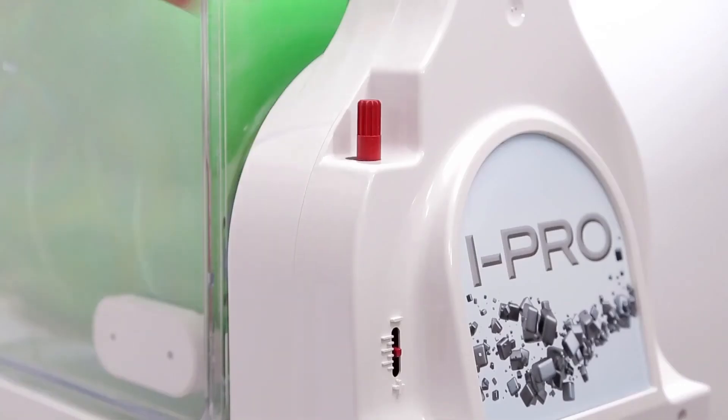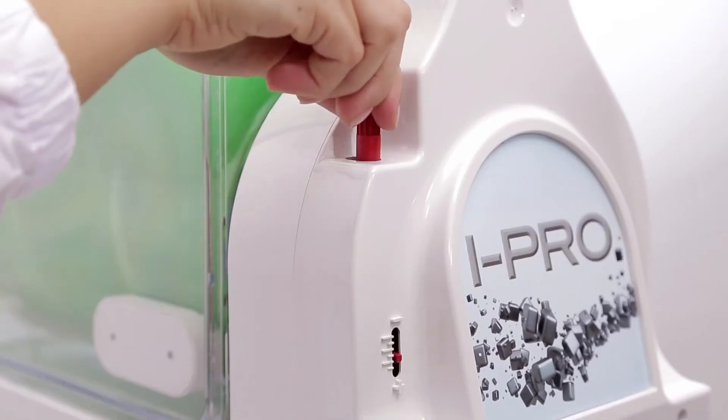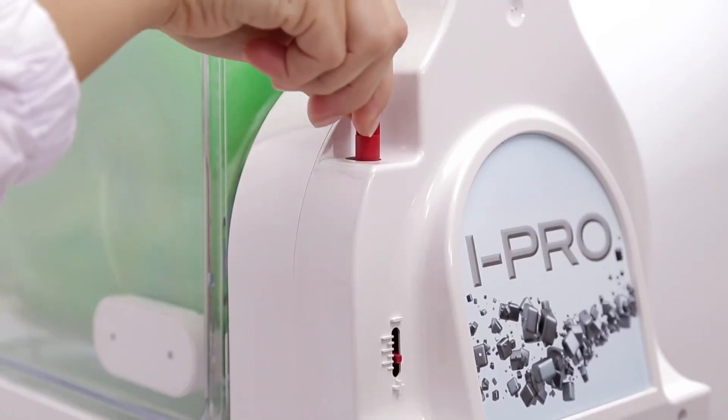Turning the screws located on the back of the machine, it is possible to adjust the consistency of the product in the following way: clockwise to make the product less dense, counterclockwise to make the product denser.